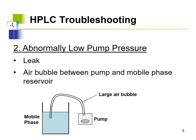The next potential issue is abnormally low pressure, which is the opposite of high pressure. Low pressure is typically indicative of a leak in the system. A leak could occur where the line is connected to the column — if it's not tightly connected, it can cause liquid to leak out, presenting as low pressure. Sometimes various parts such as connecting joints become worn out and old, so they are not sealed properly and therefore cause a leak.